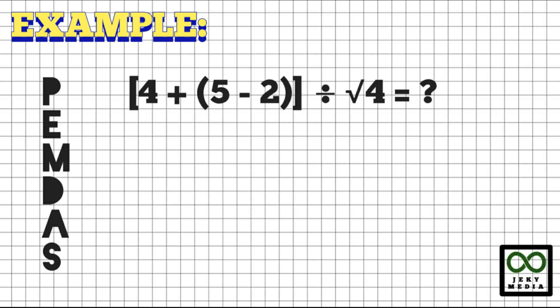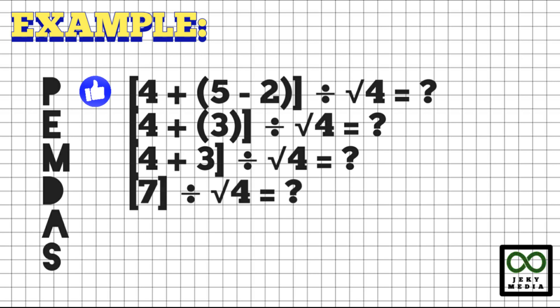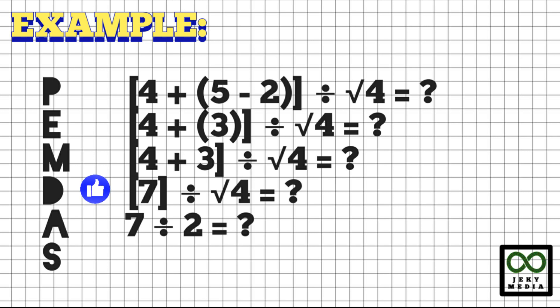Next, we have the quantity inside a bracket: 4 plus the quantity inside a parenthesis, 5 minus 2, divided by the square root of 4. Let's start with the innermost grouping — the one inside the parenthesis. Copy 4; 5 minus 2 is 3. Work outwards: copy 4 again and remove the parenthesis from 3. Let's work on the bracket: 4 plus 3 is 7. Now remove the bracket from 7 and operate the square root of 4 — square root of 4 is 2. We only have division: 7 divided by 2 is 3.5.